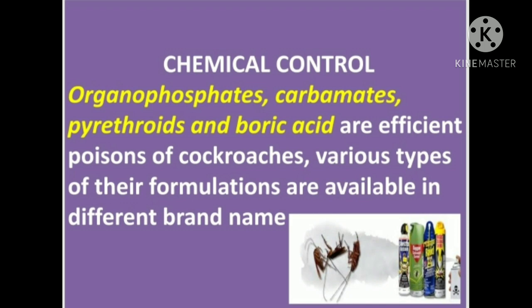Now we will study the last topic: chemical control. Organophosphates, carbamates, pyrethroids, and boric acid are all efficient poisons for cockroaches. Various formulations are available in the market under different brand names.